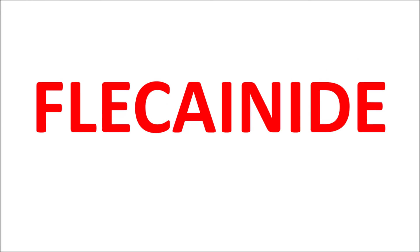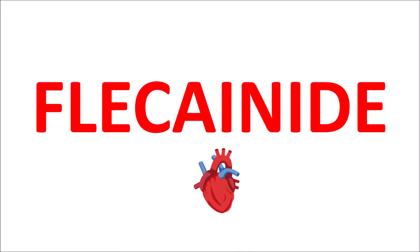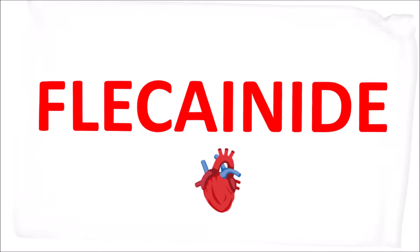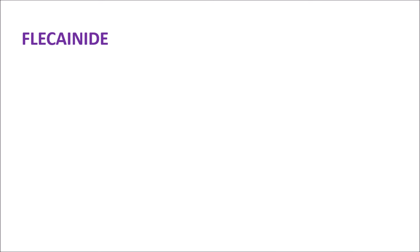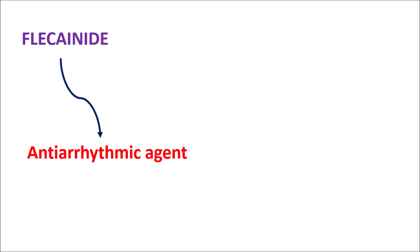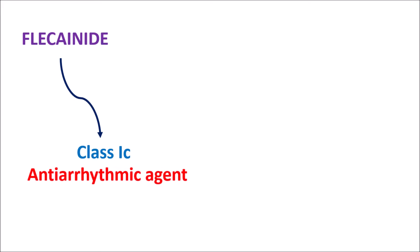Today in this video, let's talk about Flecainide. Flecainide is one of the medications classified as an antiarrhythmic agent. Antiarrhythmic agents are classified into different classes based on their target of action. Flecainide is a class 1c antiarrhythmic agent which acts as a sodium channel blocker.